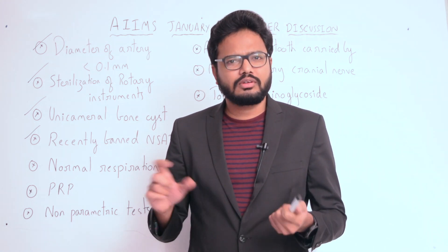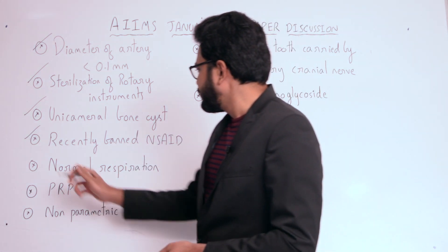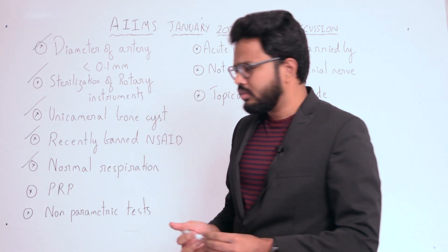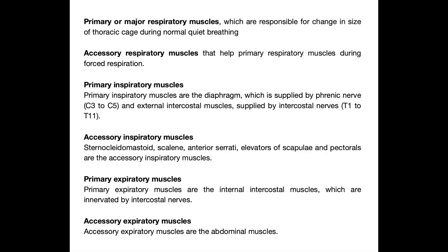Moving on to the muscles which play an important role during normal respiration. We have primary muscles as well as accessory muscles. Primary or major respiratory muscles are responsible for changes in size of the thoracic cage during normal quiet breathing, whereas accessory respiratory muscles help the primary muscles during forced respiration.